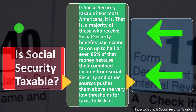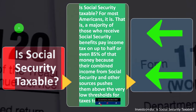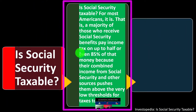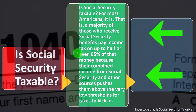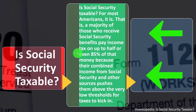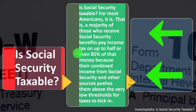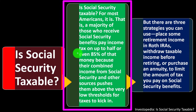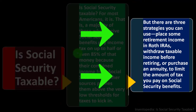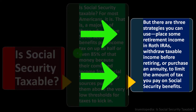Income taxes are a progressive tax, meaning your tax brackets go up as you earn more. As your income rises above a certain threshold, more of your Social Security benefits become subject to tax. You may have to claim up to 85 percent as income if total income is fairly high. There are three strategies to reduce this tax: place some retirement income in Roth IRAs, withdraw taxable income before retiring, or purchase an annuity.